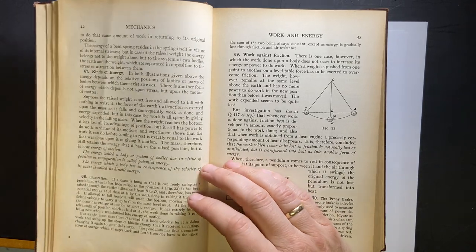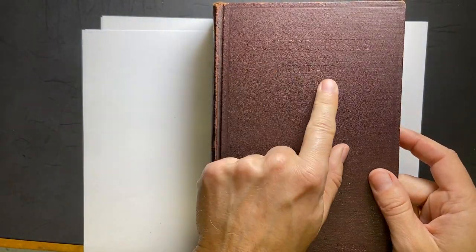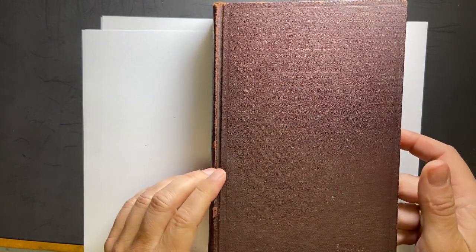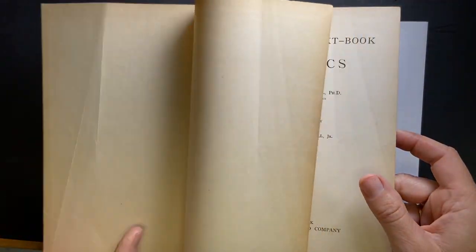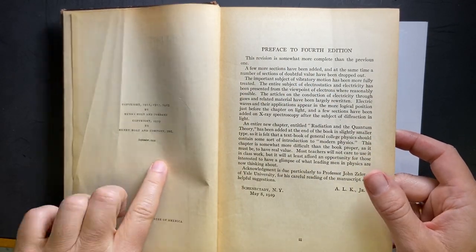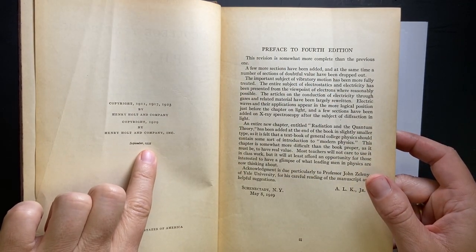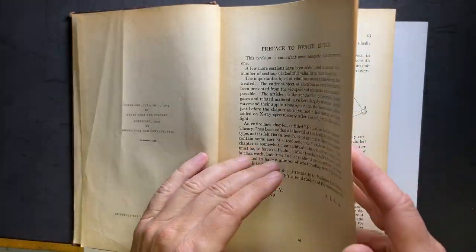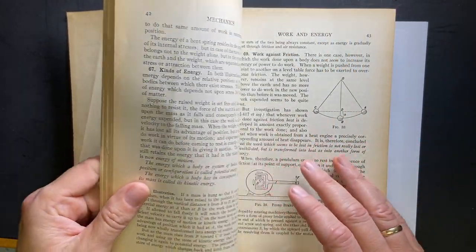I am returning to visit this book. This is College Physics by Kimball, and I briefly showed this before. But if you look over here, the last date was 1935. So this is an old textbook, obviously, almost 100 years.